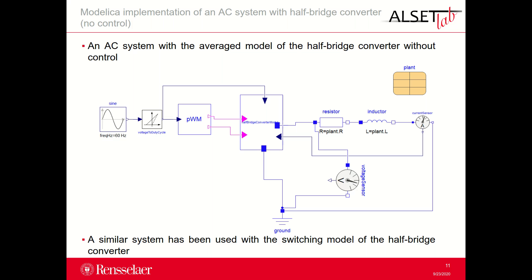An AC system with the average model of the half-bridge converter without any control is illustrated in this slide. This system has been used to implement control strategies for regulating the output current measured by the current sensor in this block diagram, indicated in the open-loop system. The sinusoidal source is used to calculate the duty cycle D, necessary for the modulation factor M, that is one of the inputs of the half-bridge converter block for the average model. The output of the half-bridge converter is connected to the AC system characterized by components R and L. The current sensor in series with R and L is used to measure the AC output current I, that is fed back as input of the converter, and that will be controlled in the following steps.